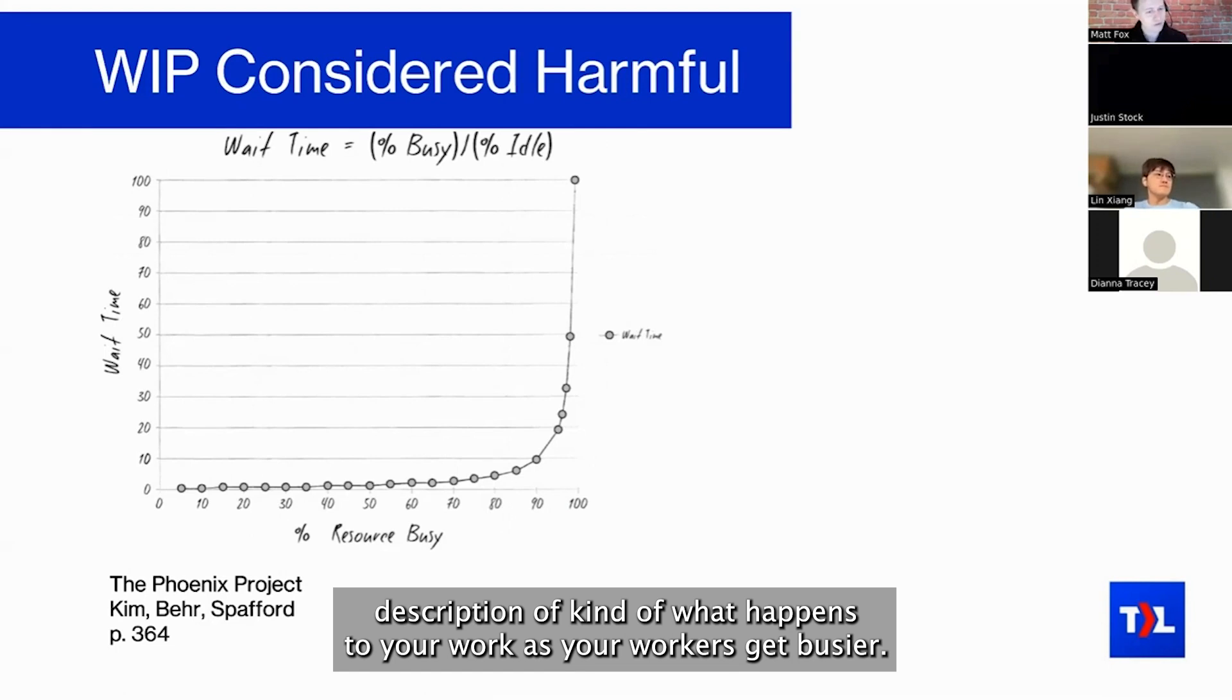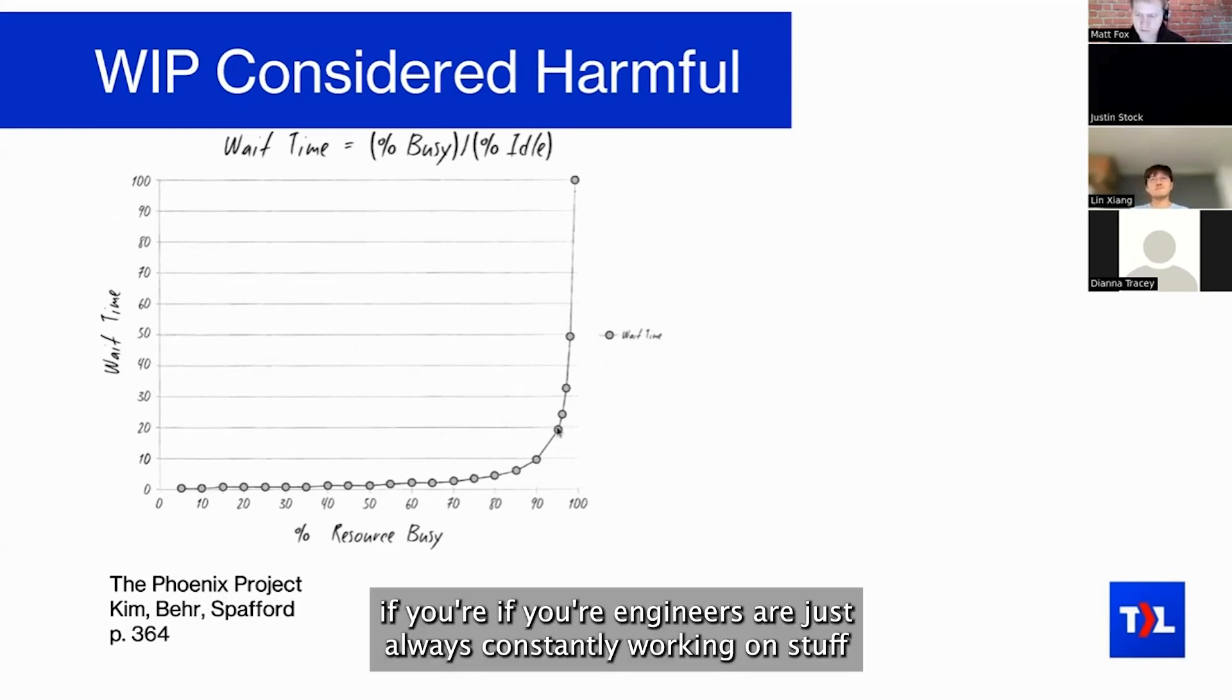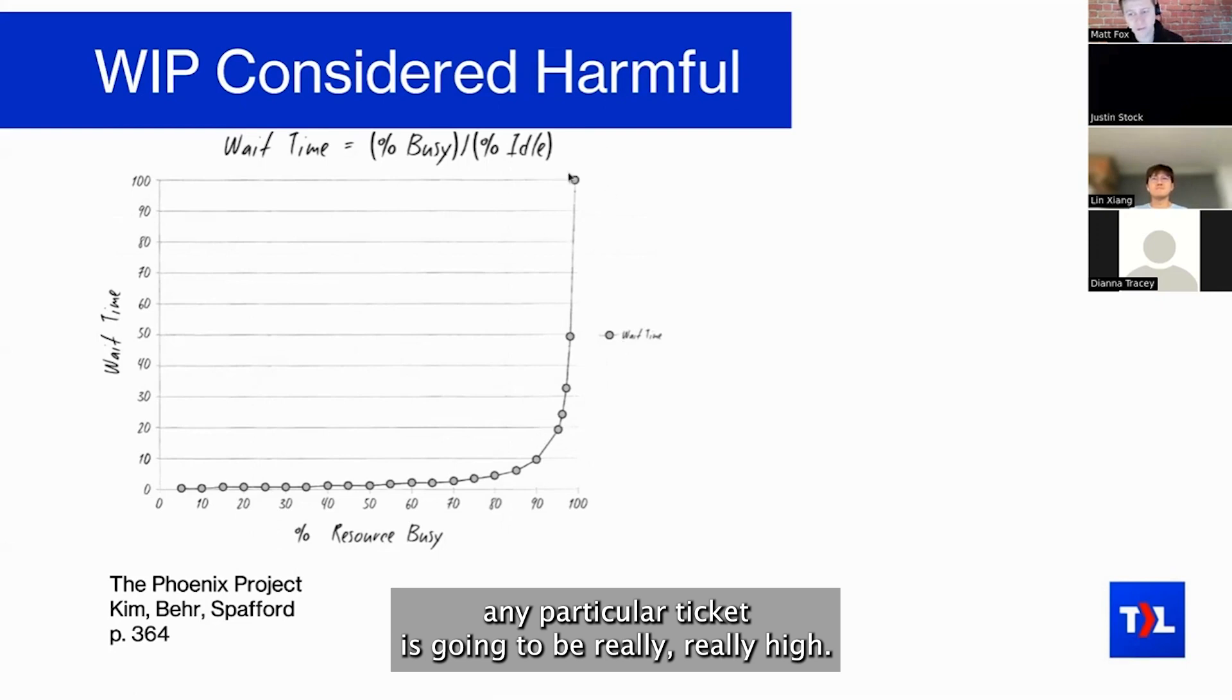What this is saying here basically is, if your engineers are just always constantly working on stuff—like they're utilized 100%—then the time that they take to finish any particular ticket is going to be really, really high. If an engineer has some spare time, like they're not always just totally flat out working on the main thing that they have to be working on, then they're going to be able to get to any work that you throw them pretty quickly.